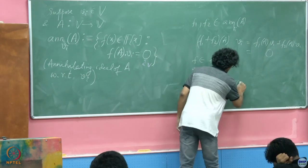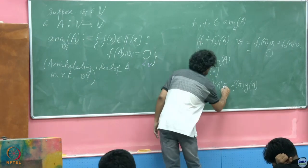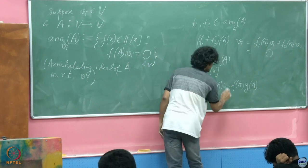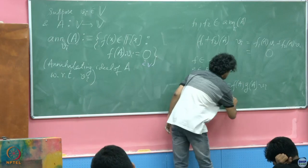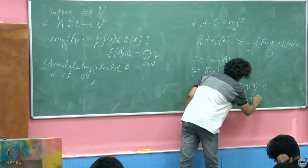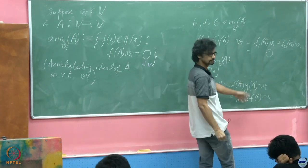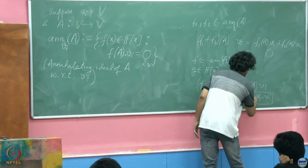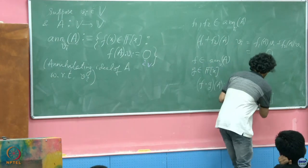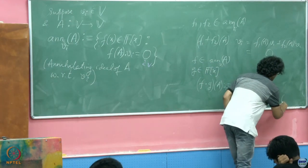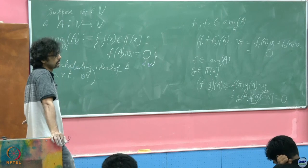Second property: F belongs to the annihilating ideal of A with respect to V_i and G is just a polynomial. See, the good thing about all of this is that any power of A commutes with itself. That is one of the most fundamental observations. So I do not care about whether it is F(A) into G(A) or G(A) into F(A). So what can I say about F times G of A? This is F(A) into G(A). Let this act on V_i. I can tweak the order. So I can just say it is G(A) times F(A) times V_i, which of course, by virtue of this term going to 0, it is a 0 vector. So 0 vector when acted upon by any operator has to be 0. Therefore, the whole thing goes to 0. So it is an ideal.